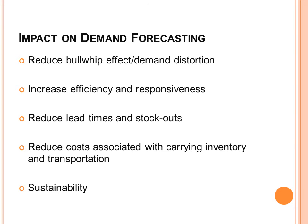The impact of support vector machines on demand forecasting can really improve things. It can reduce the bullwhip effect and demand distortion, as proven during the 2008 case study. Being able to know exactly how much stock and safety stock you need on hand can help reduce lead times and stock-outs. It can also reduce costs associated with carrying inventory and transportation — you won't need next-day air shipments because you've forecast more accurately. And ultimately, this leads to sustainability and a smaller carbon footprint if you're using less transportation to move goods.